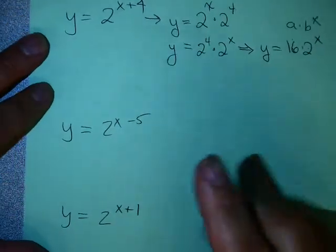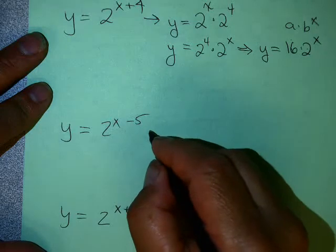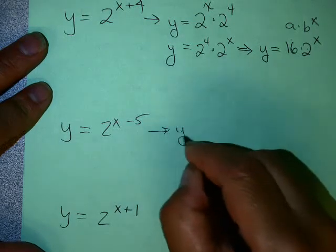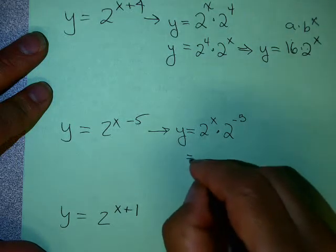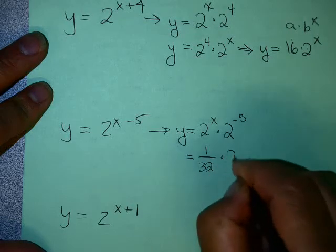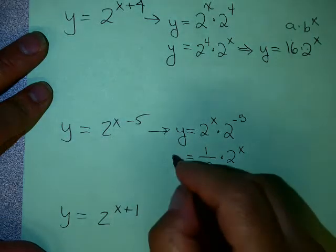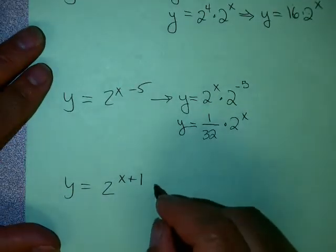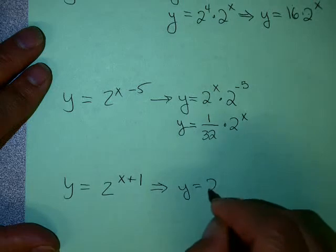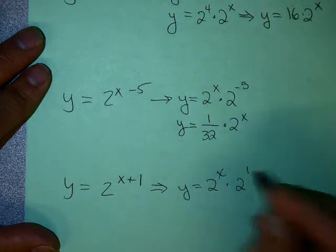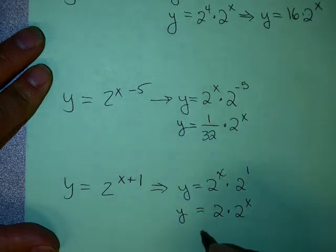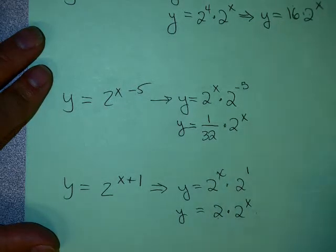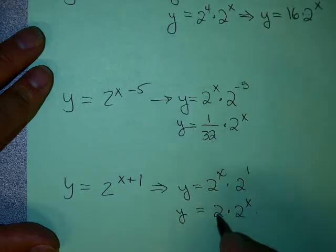Try this one on your own. y equals 2 to the x minus 5 is 2 to the x times 2 to the minus 5. Since 2 to the minus 5 is 1/32, that ends up being 1/32 times 2 to the x. And y equals 2 to the x plus 1 gives 2 to the x times 2 to the 1, and 2 to the 1 is just 2, so that's 2 times 2 to the x. It's useful to have exponential equations in the form a times b to the x to easily see the growth rate, base, and coefficient.